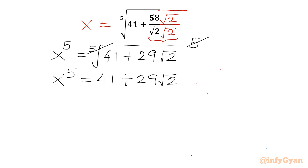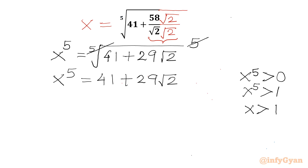From here we can write two points. The right-hand side is obviously positive, so x to the power 5 will be positive. And this number is greater than 1 also, so x must be greater than 1. In general, if x to the power n is greater than 1, then x should be greater than 1, where n is greater than 1.